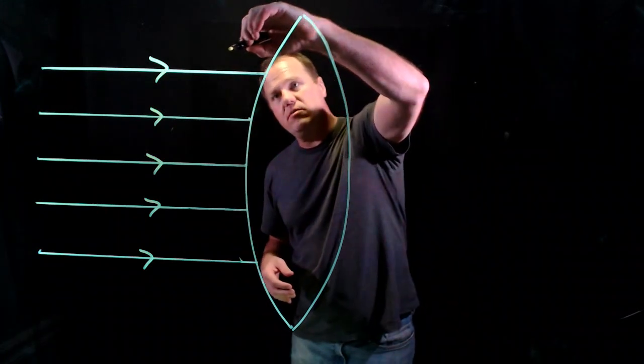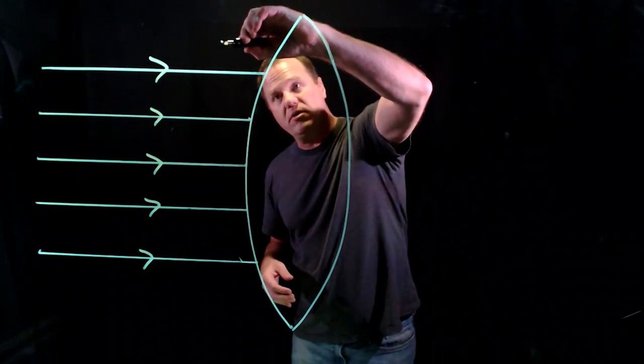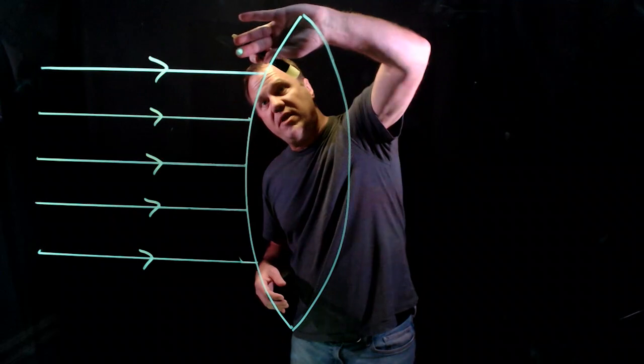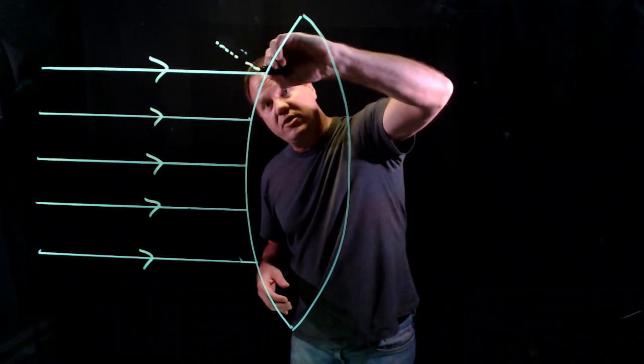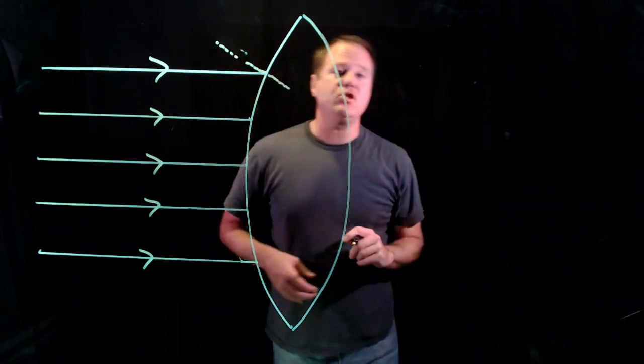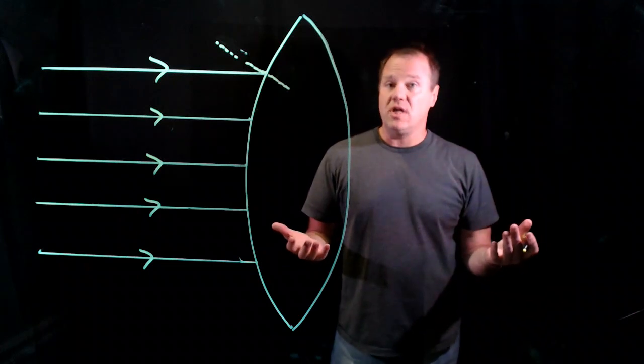So let's just draw an approximation here. So we draw a line that's perpendicular to the surface. That's the convention for how we use Snell's law of refraction.